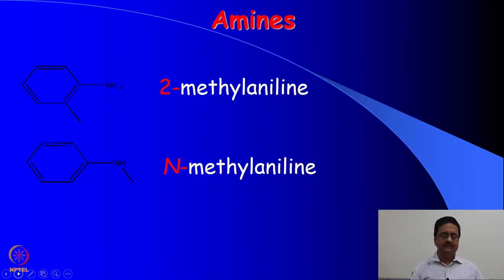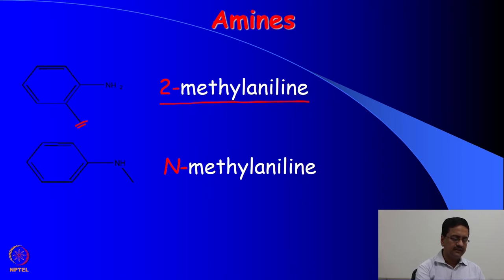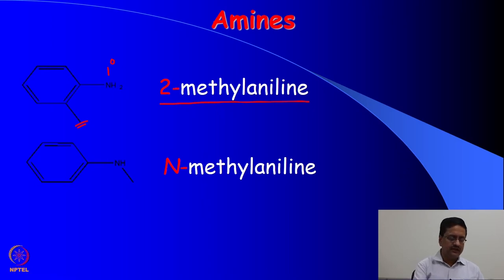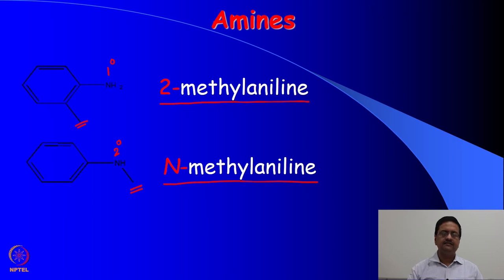These two compounds have the same molecular formula but the position of the methyl group is different. In the first case the methyl group is connected to the aromatic ring, so it is named 2-methylaniline and the nitrogen is primary — it is a primary amine. But when the methyl group is connected to the nitrogen, we write it as N-methylaniline, and that nitrogen is a secondary nitrogen, meaning N-methylaniline is a secondary amine.